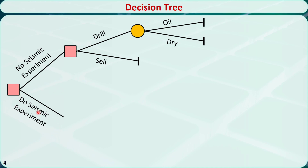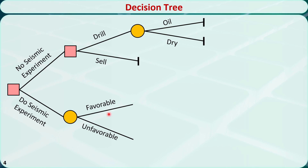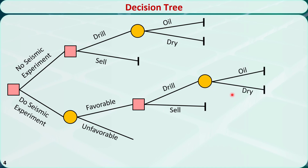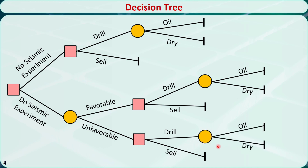Come back to the beginning. If they decide to do the seismic experiment, there are two potential outcomes: favorable or unfavorable. If the result is favorable, they need to decide whether to drill or sell. If they drill, there are two potential outcomes: oil or dry. If the result is unfavorable, they still need to decide whether to drill or sell. If they drill, there are two potential outcomes: oil or dry. This is the structure of the decision tree.